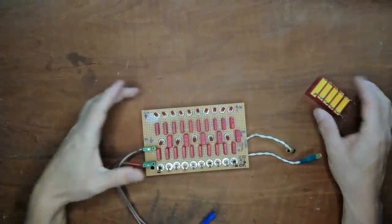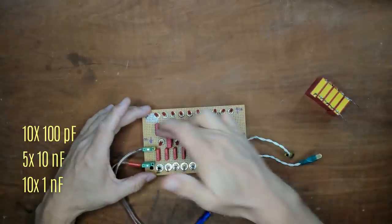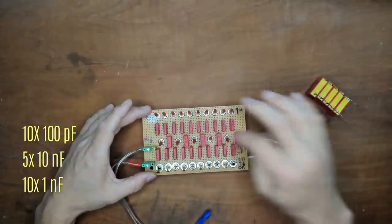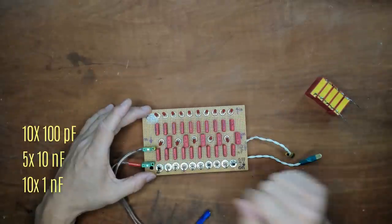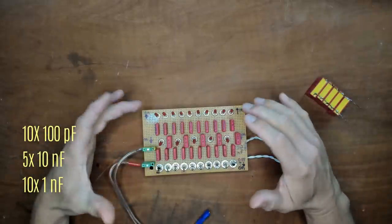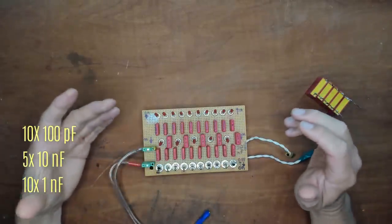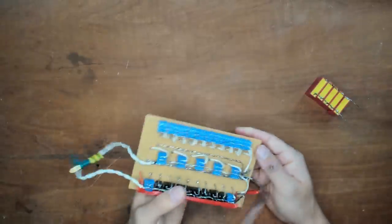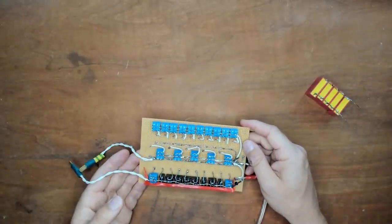This is a switchboard made of parallel capacitors. All these capacitors can be switched in and out by these switches. This is a row of 10 100 pF. Here are 5 times 10 nF. And here's 10 times 1 nF. And in this way I can choose any capacitance I want. Really fast, really easy. And yeah, it works great. I'm really happy with it.